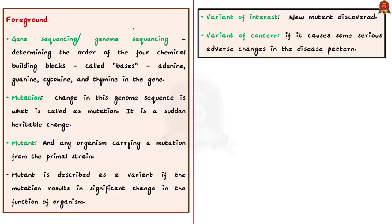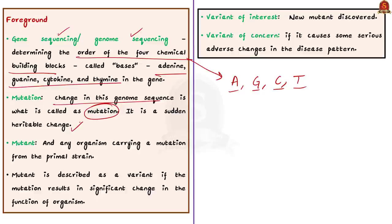First, let us learn about genome sequencing. Gene sequencing and genome sequencing are the same. Sequencing gene means determining the order of the four chemical building blocks called bases. The bases make up the gene. The bases are known as adenine, guanine, cytosine and thymine. The sequence of these bases conveys genetic information that is carried in a particular gene segment. This helps us to understand the organism biologically. Any change in this genome sequence is called mutation. It is a sudden, heritable change. Microorganisms like virus adopt mutation to circumvent the immune mechanisms of the body.